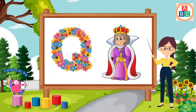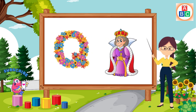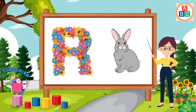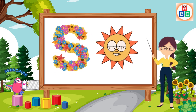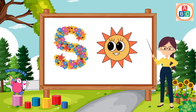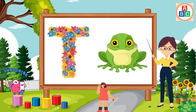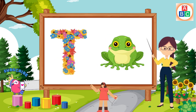Q is for queen, qu-qu-queen. R is for rabbit, r-r-rabbit. S is for sun, s-s-sun. T is for toad, t-t-toad.